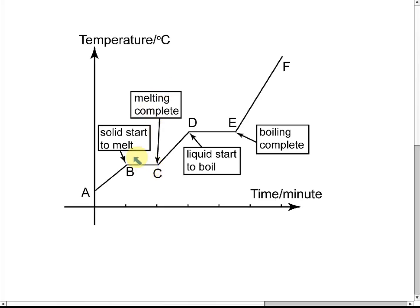This heat supplied to break the intermolecular force between the particles is called latent heat. Latent heat is the heat used to change the state from solid to liquid. To change the state, we need to supply thermal energy to break the intermolecular force between the particles. For the melting process, the latent heat is called the latent heat of fusion.